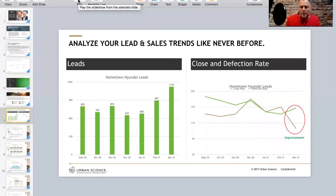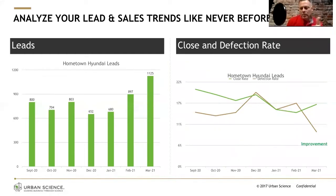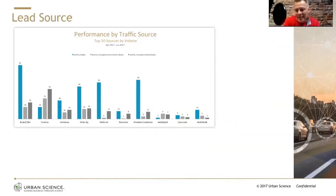Everybody can go into their CRM and pull out what their lead volumes look like over a period — in this case, seven or eight months. But where you start seeing a different story is on the right-hand side. Dealers like Ben and others start to see trends there — not just on their successes, but whether they're doing better in the marketplace by not losing the opportunities they have.